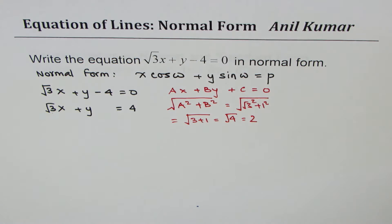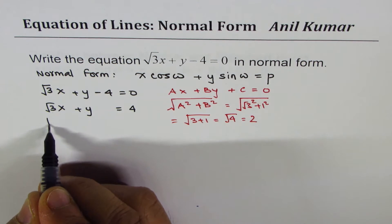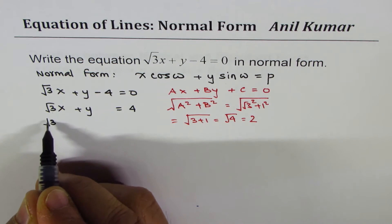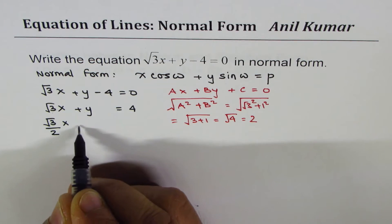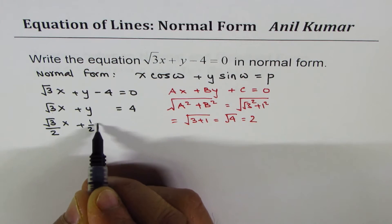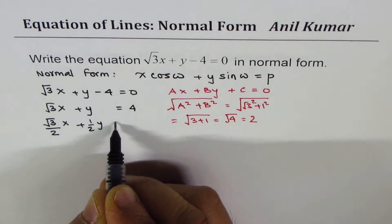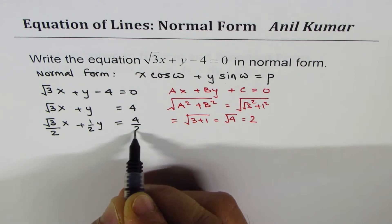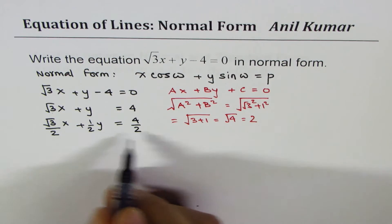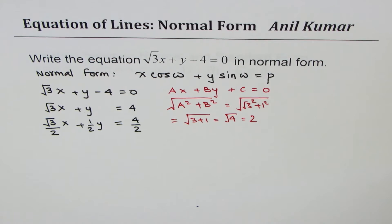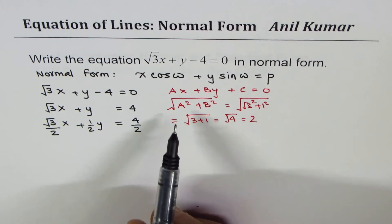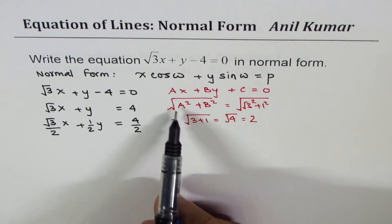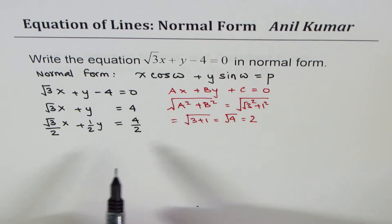So we will divide each term by 2. What we get is: (√3/2)x + (1/2)y = 4/2. Dividing each term by 2 is the next step, because 2 is √(a² + b²).